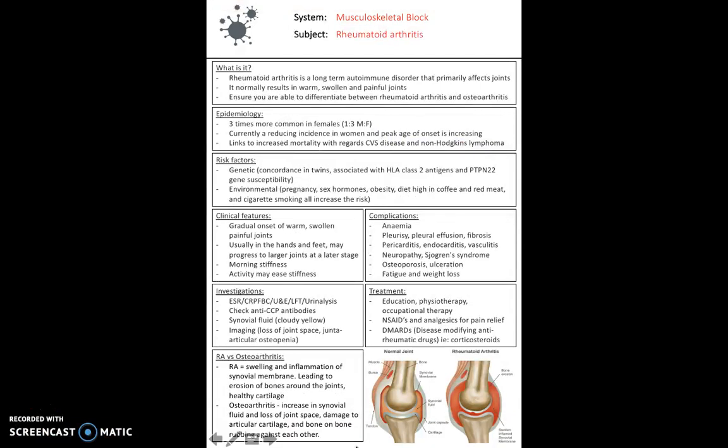Next we can look at rheumatoid arthritis. This is a long-term autoimmune disorder that primarily affects the joints, resulting in warm, swollen, and painful joints. It's three times more common in females than males. Currently there's reducing incidence in women and the peak age of onset is increasing, so older people are starting to get this disease more commonly. It's got links to increased mortality with cardiovascular disease and non-Hodgkin's lymphoma. Risk factors for rheumatoid arthritis are genetic aspects, so concordance is shown in twins, association with HLA class 2 antigens, and a gene which shows susceptibility to rheumatoid arthritis. Environmental factors also play a role: pregnancy, sex hormones, obesity, diet high in coffee and red meat, and cigarette smoking all increase the risk.